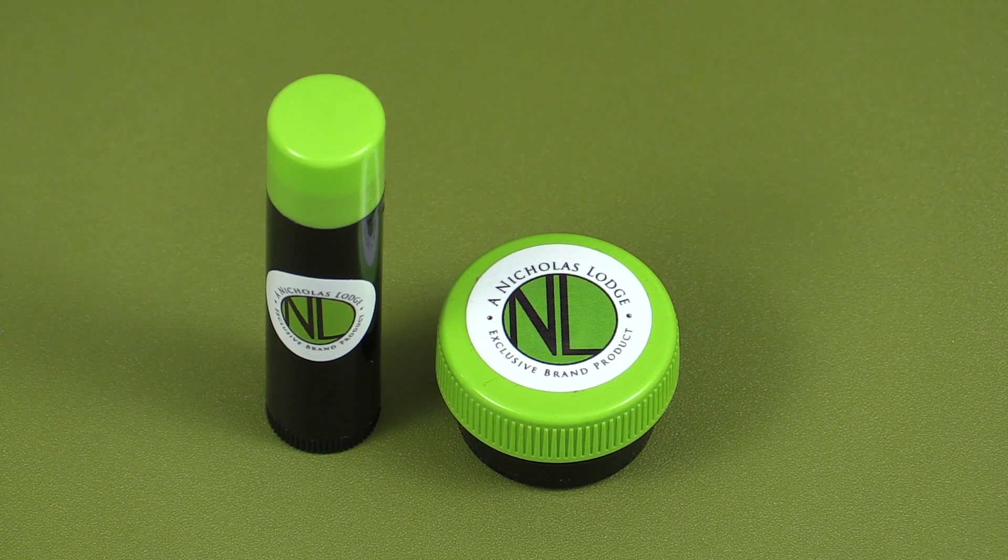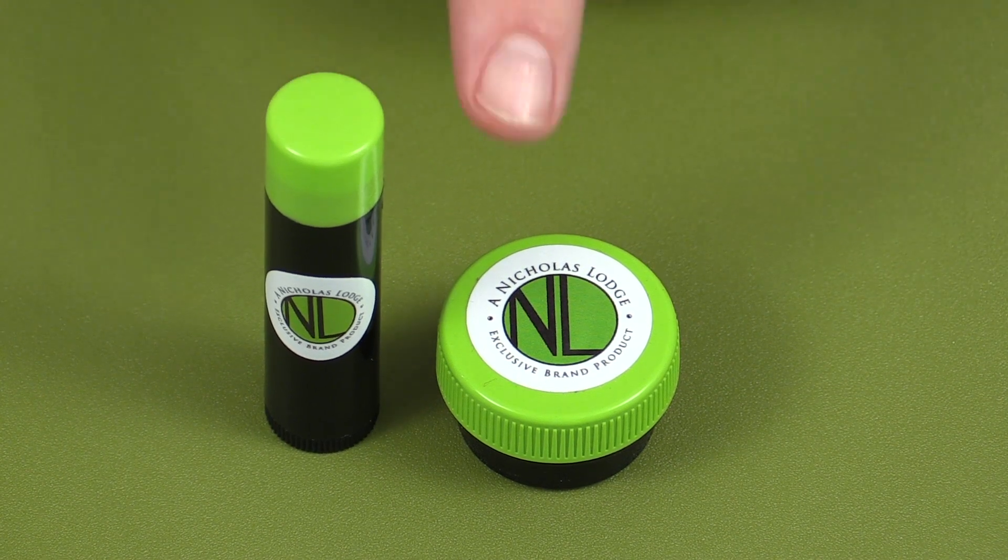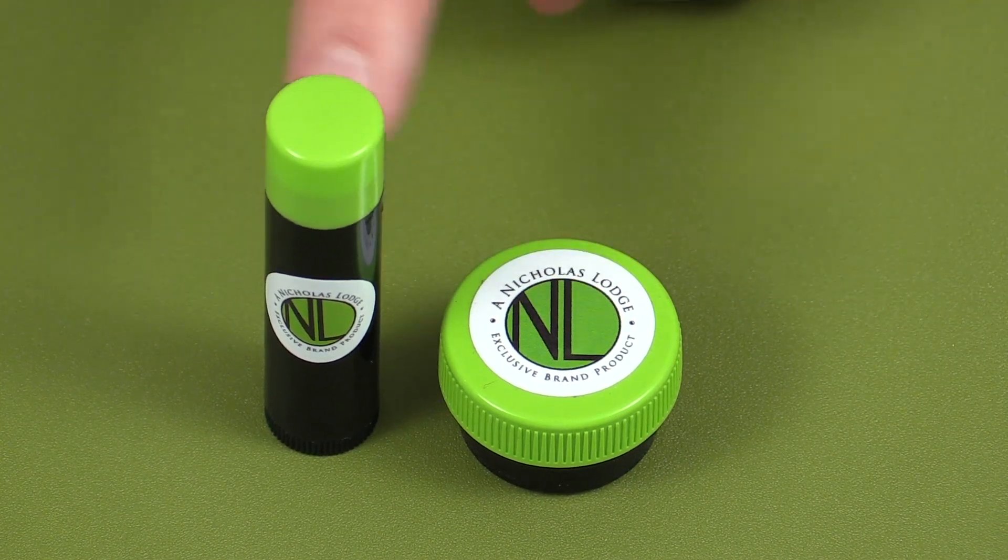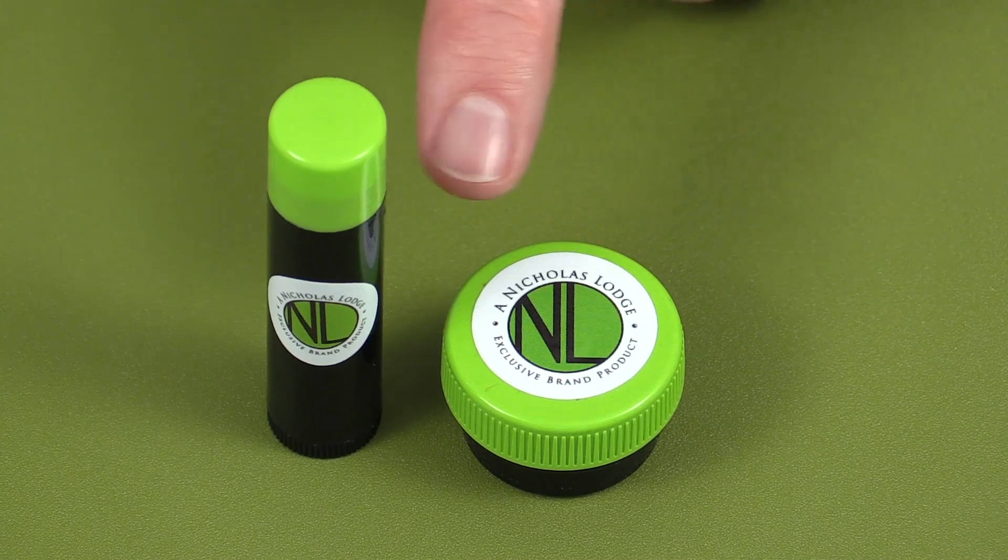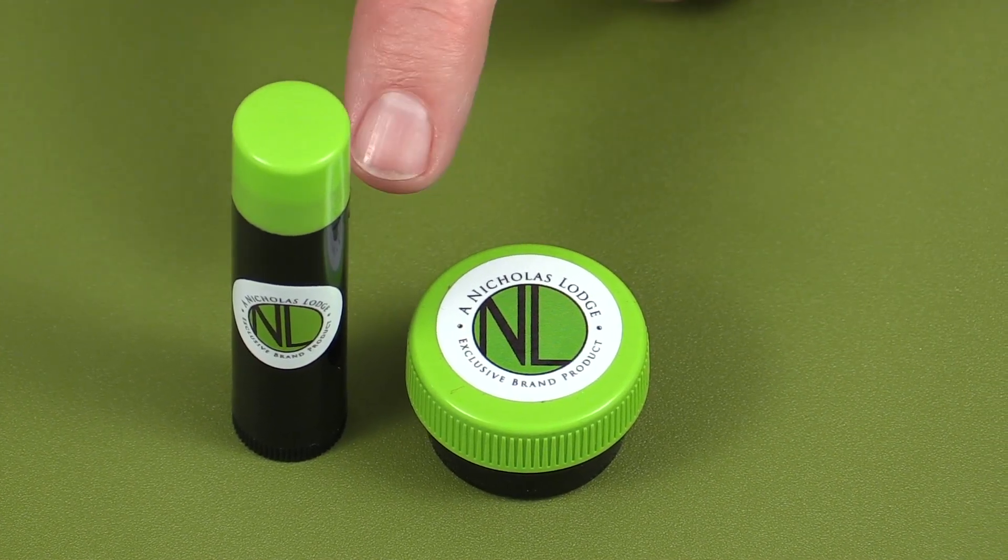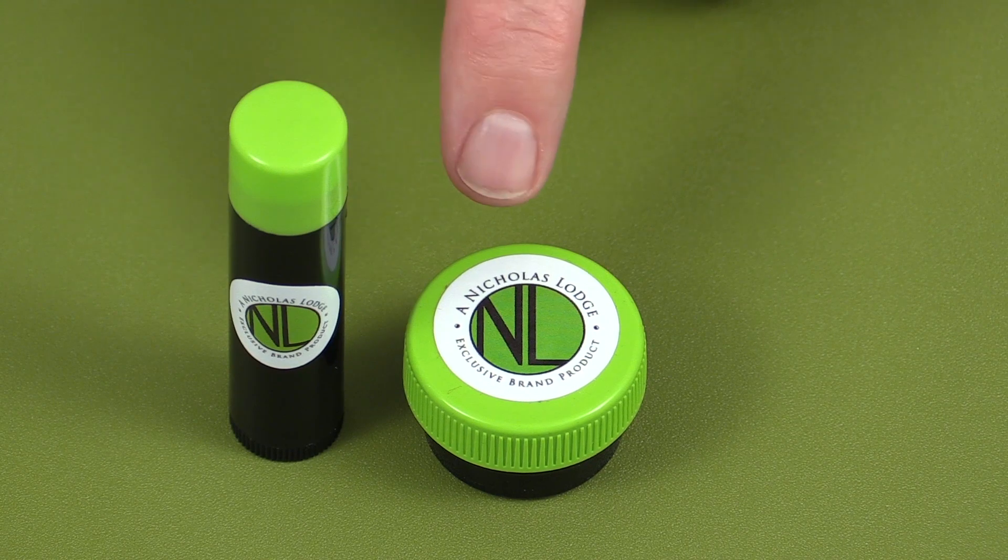This is the easy release stick and this is the easy release pot. These both contain the same product, so this is a natural product that we use for easy release from a lot of different cutters.